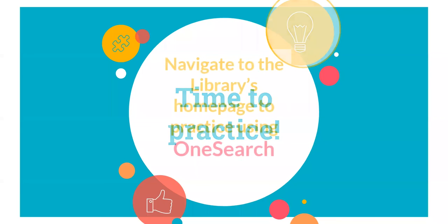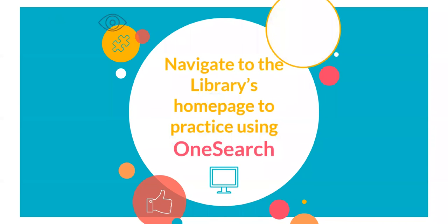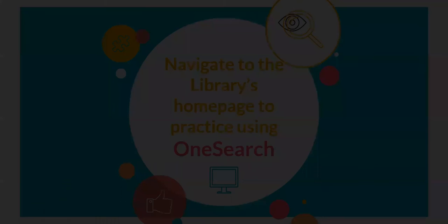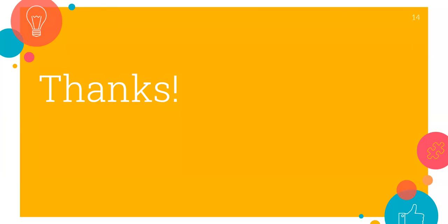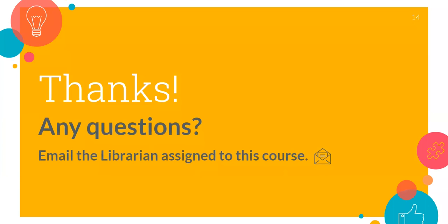Now it's time for you to put your skills to the test and get some practice using OneSearch. Once you've made your way back to the library webpage, check out the Using OneSearch Guide to learn even more tips for finding books and articles. When you're ready, dive into OneSearch and start finding information on your research topic. Thanks for watching. Always feel free to reach out to your assigned librarian for more assistance or to schedule a one-on-one research consultation. Happy researching, and don't forget to watch the rest of the presentations in the research series.